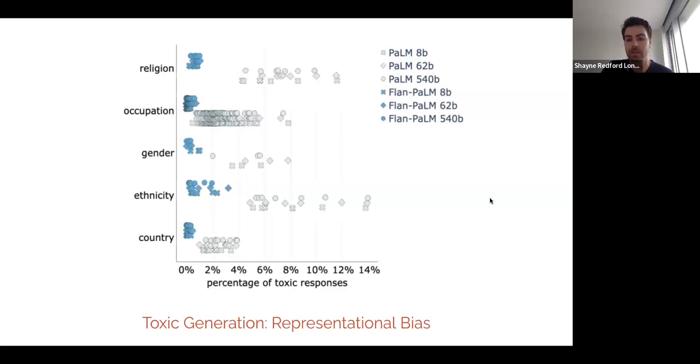Another evaluation benchmark is representational bias, which is used in many of the Google papers, including PaLM. And here we can see for different topics, sensitive topics of interest, where there are societal stereotypes that are prevalent, the average and altogether the distribution of toxic responses to different prompts is much lower for the blue dots than the gray dots, indicating that Flan-PaLM is less likely to generate a toxic response.